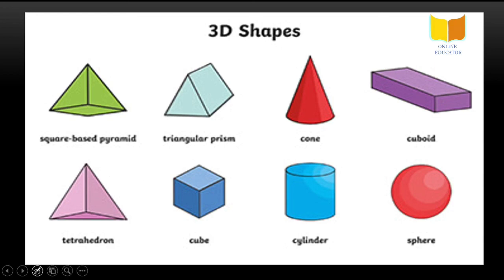Now these are some of the 3D shapes which you must have seen. Like square-based pyramid, triangular prism, cone, cuboid, sphere, cylinder, cube, tetrahedron. So these are some of the 3D shapes which you will be studying. These are the simple ones which you have studied right now, and these you will study in the senior classes.